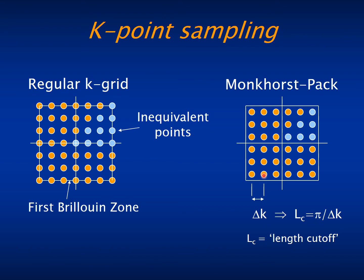So we do something similar as in real space, and we characterize the fineness of the grid by a vector of reciprocal space that in real space is given by this relationship as a function of the mesh separation, and we call it the length cutoff. By increasing the length cutoff, you increase the number of grid points and the accuracy of the integration.